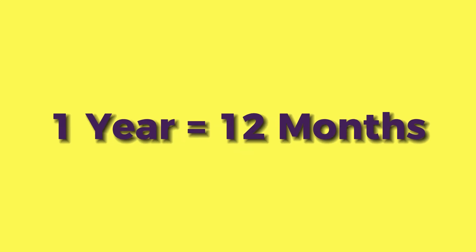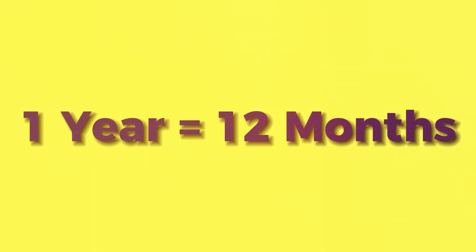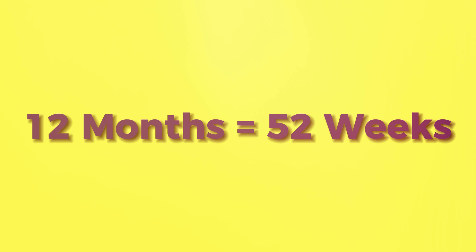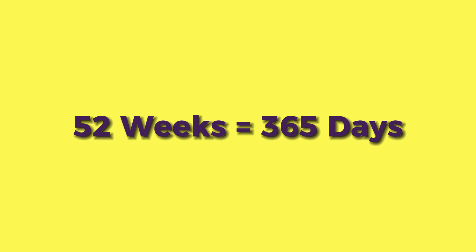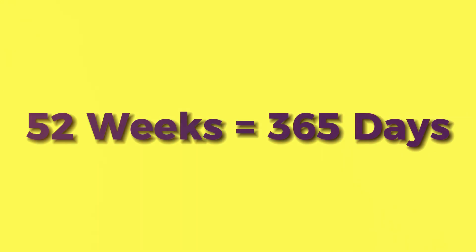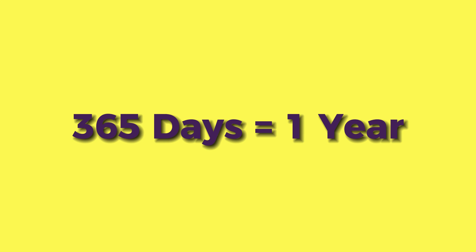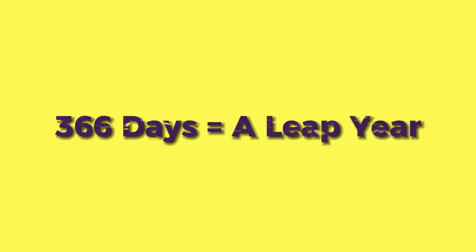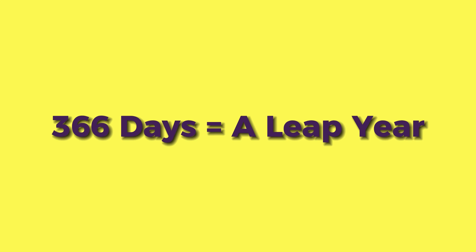One year equals 12 months. 12 months equals 52 weeks. 52 weeks equals 365 days. 365 days equals one year. 366 days equals a leap year.